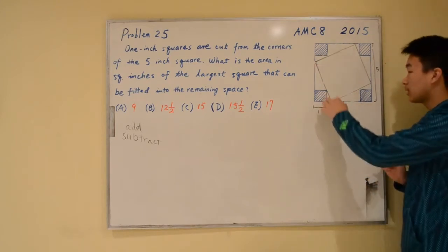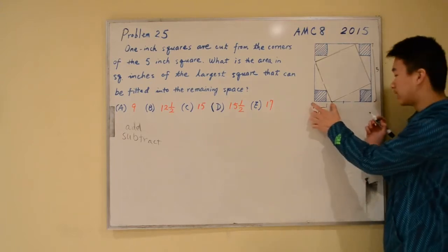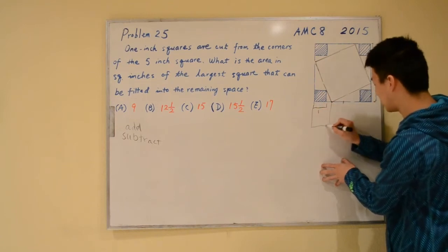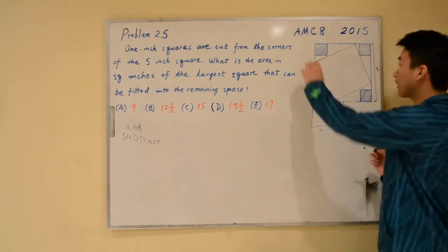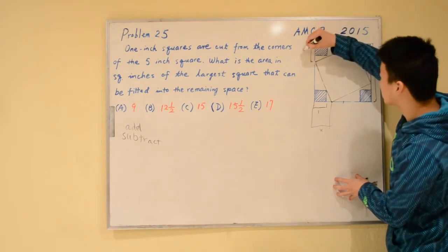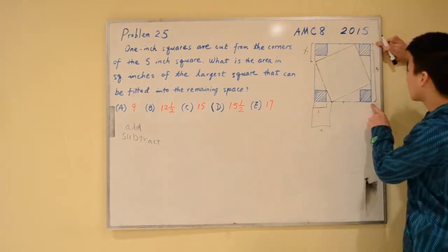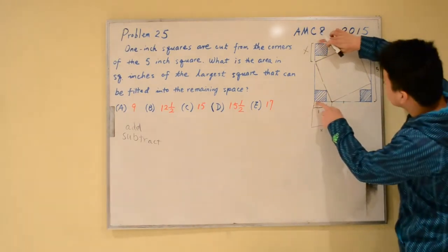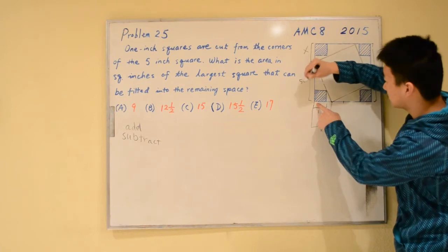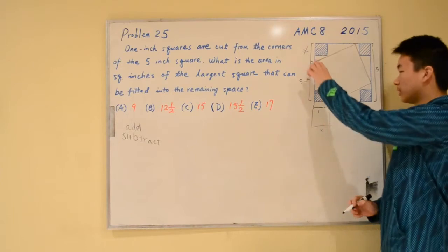Right now we don't know anything about this triangle, so we create some variables. Let's call this length x. By symmetry, this length on the other side is also x. Because the length of the big square is 5, this side is 5, so this length here is 5 minus x. Now we know the base and the height of the triangle we're looking for.